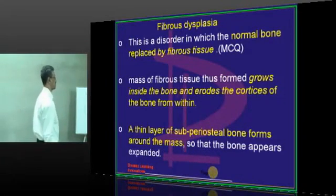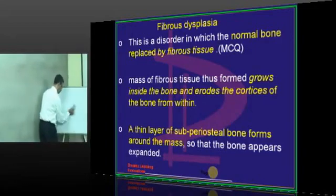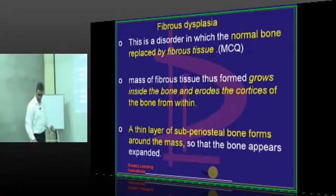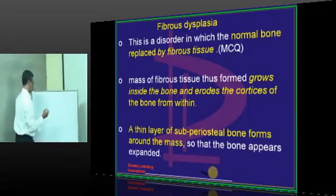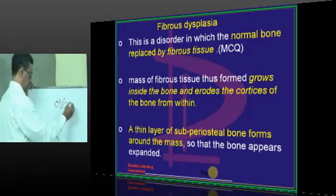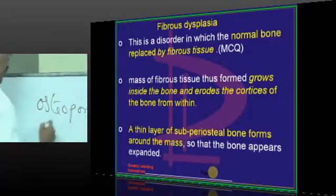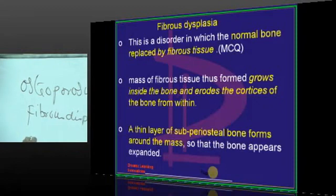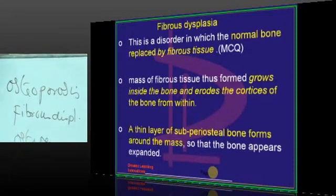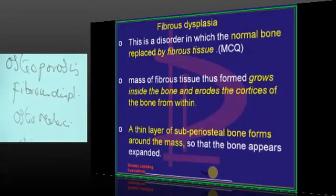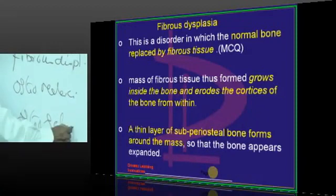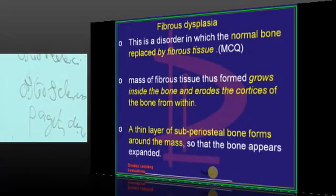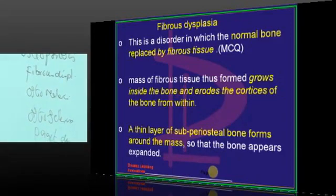Before going to fibrous dysplasia, I want to mention something. There are some entities which are metabolic bone diseases — for example, osteoporosis, fibrous dysplasia, osteomalacia, osteosclerosis, and Paget's disease. The mechanism appears to be the same across all of them.